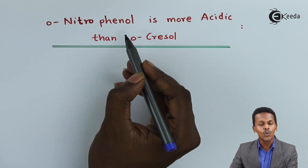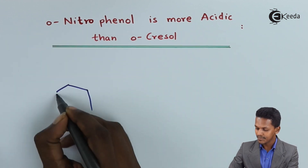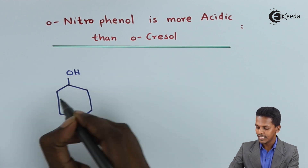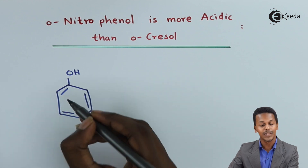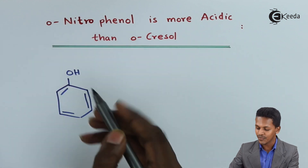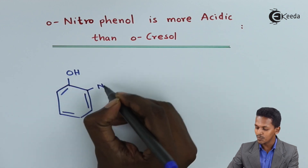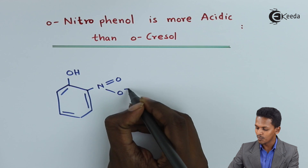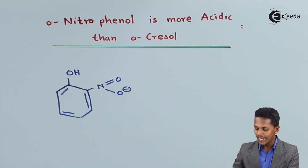If we are talking about O-nitrophenol, the structure is one where the OH group is attached to the benzene ring. Since I am talking about O-nitrophenol, at the ortho position there will be a presence of a nitro group. So this is the structure of O-nitrophenol.